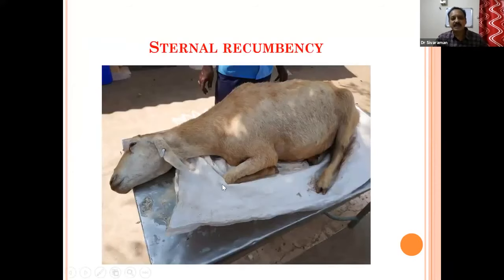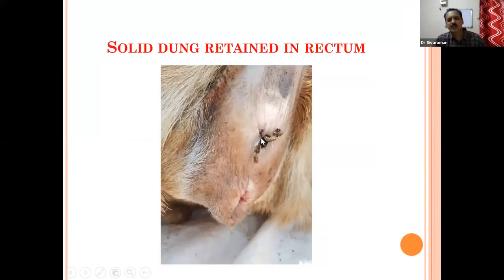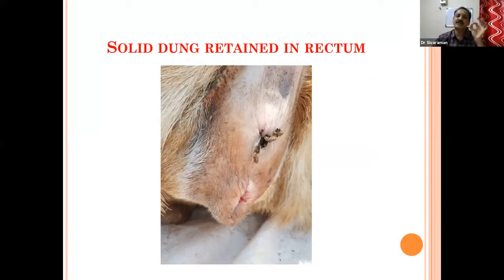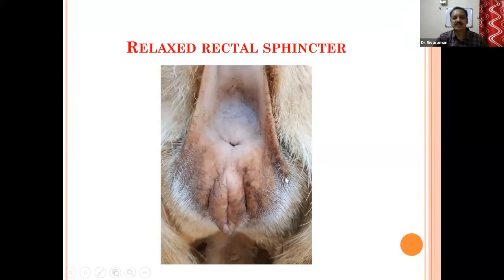The animal is in sternal recumbency in the unconscious stage — all reflexes are reduced, menace reflexes are reduced, and nasal secretions are present. When we palpate the rumen, it is not having fluid splashing sound, so acidosis is ruled out. The rumen is doughy in nature. The rectal mucosa is slightly relaxed — that is a clear clinical clue for hypocalcemia. In acidosis, there would be semi-solid or watery dung material, but here the dung material is solid, pellety, or normal in consistency, and retained partially in the rectum. The rectal sphincter is very much relaxed and urine is not voided.